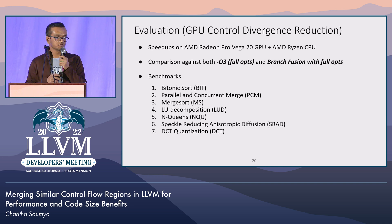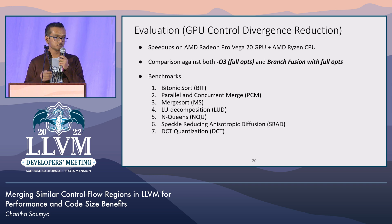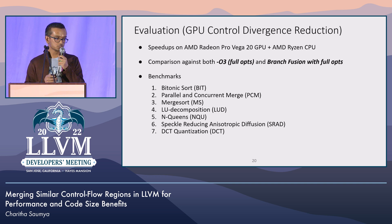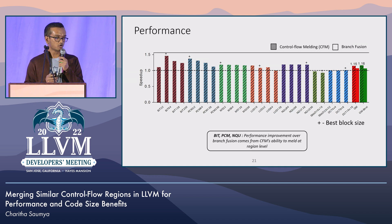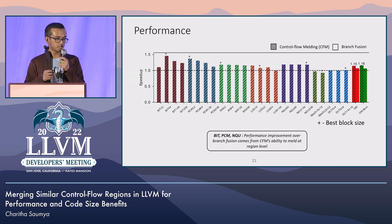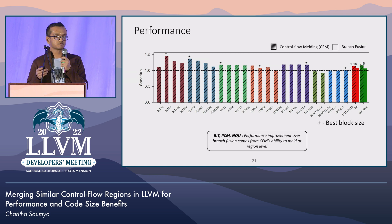For GPU evaluation, we measure speedups on an AMD platform, comparing against full optimization (O3) and branch fusion with full optimizations, using seven benchmarks from well-known GPU benchmark suites. This shows the speedups obtained for different block sizes across all benchmarks. The transformation increased speedup relative to branch fusion as well as the baseline, and the ability to improve performance comes from its ability to merge regions at the control flow region level.